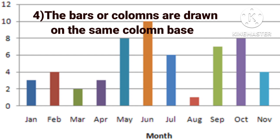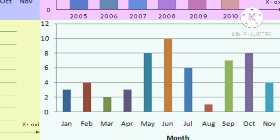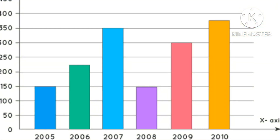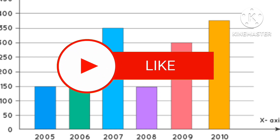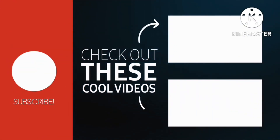The bars or columns are drawn on the same column base, and you can color the bars to look attractive. When the numerical values of the items will be excessively large, then it is scaled down to its direct proportion. I hope my today's video will become helpful for you. Stay tuned to my channel to get more amazing maths tutorial videos. Bye bye.